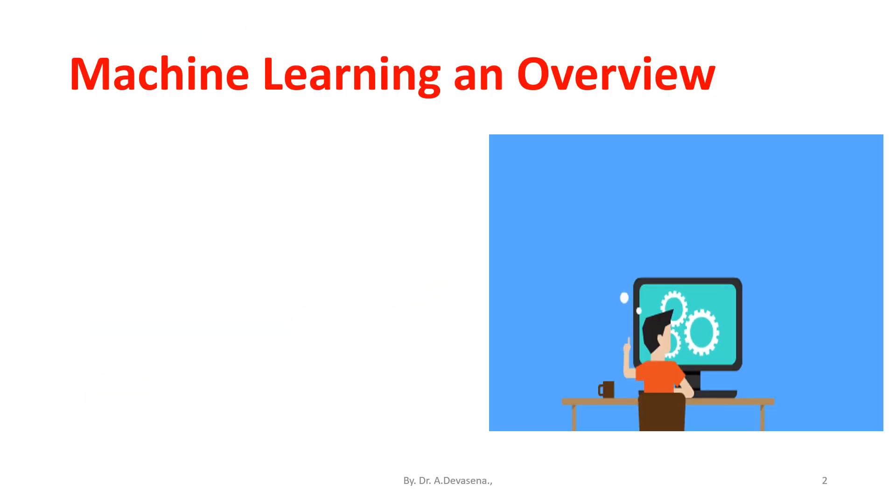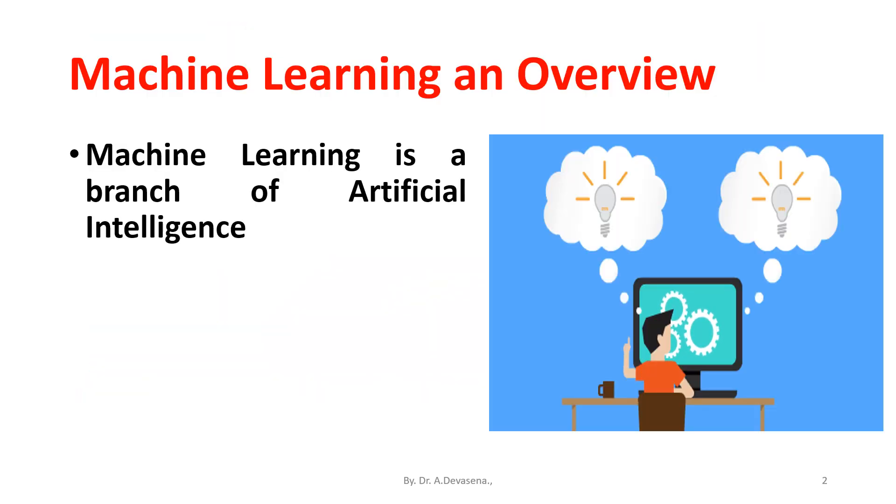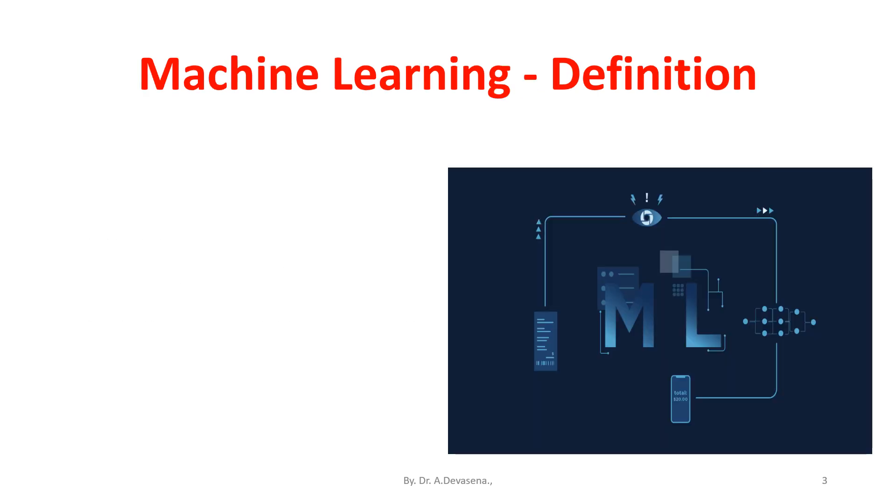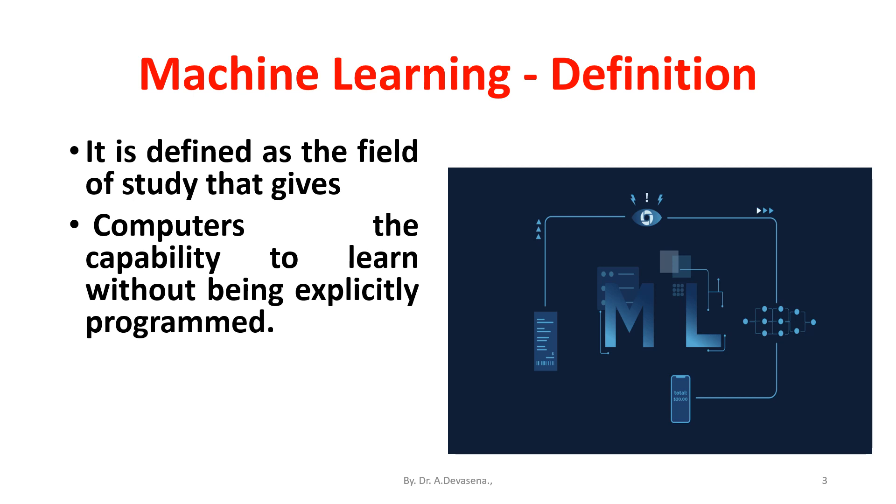Machine learning and overview. Machine learning is a branch of artificial intelligence that allows machines to learn and improve from experience automatically. Definition of machine learning: it is defined as the field of study that gives computers the capability to learn without being explicitly programmed. It is quite different than traditional programming.